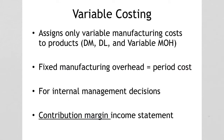Some bullet points to remember about variable costing: variable costing assigns only variable manufacturing cost to the products — that would be your direct materials and your direct labor, as well as your variable overhead. The fixed overhead under variable costing is actually a period cost, so fixed overhead would be expensed when it's incurred. Variable costing is not something that gets published to the public; it's used for internal managerial decision making. And we do not use the traditional gross profit income statement under variable costing — we use something called the contribution margin income statement.